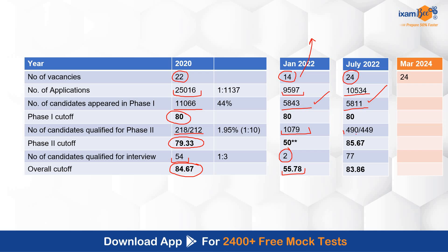Here, 490 cleared phase 1 and 449 students appeared for phase 2. Phase 2 cutoff was 85.67 this time — the cutoff went quite high. Now what was the difference? Till January 2022, only B.Tech and CS/IT students could appear for the IT stream. But from July 2022 recruitment, all B.Tech candidates — be it civil, mechanical, every engineering student — could apply. The number of candidates qualified for interview was 77, and the overall cutoff was 83.86.